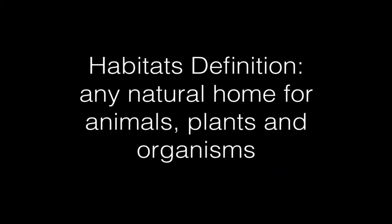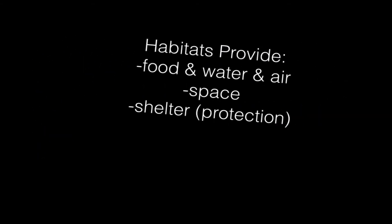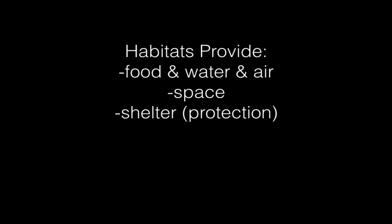First of all, let's define a habitat. A habitat is any natural home for an animal, a plant, or an organism. Habitats provide certain things for the animals that live there — they give them food, water, air, and space. Within that space, they typically need some kind of shelter, to be protected maybe from predators or from bad weather.